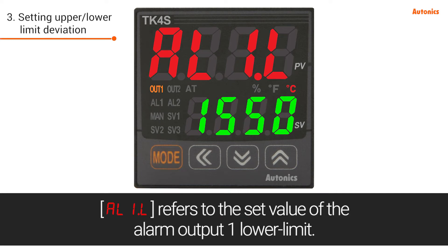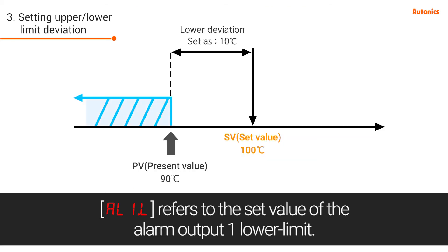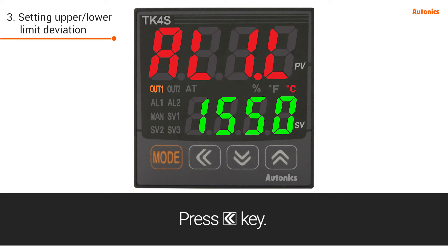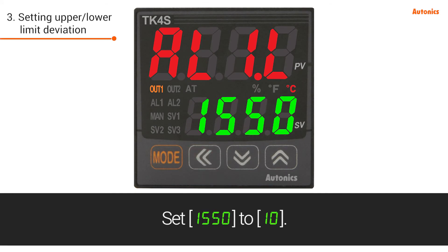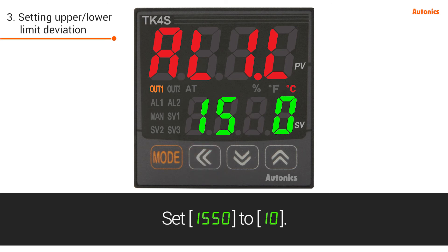AL1.L refers to the set value of alarm output 1 lower limit. Press the Left key and set the value from 1550 to 10.